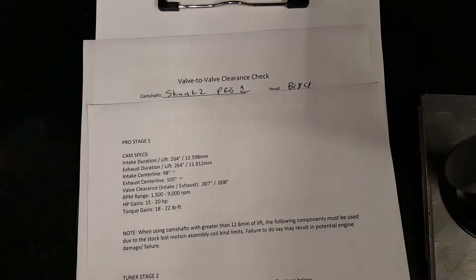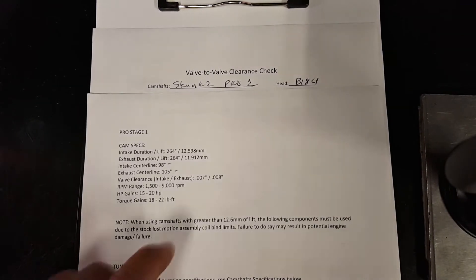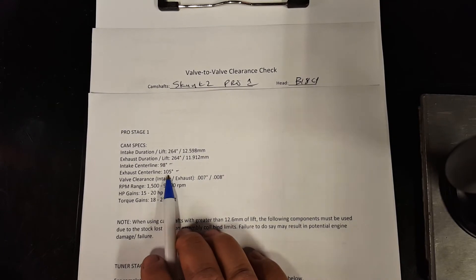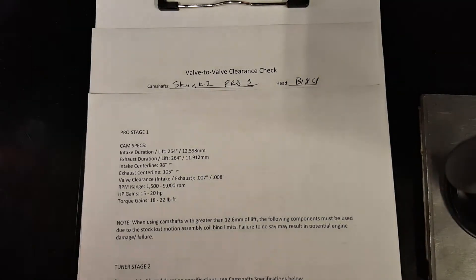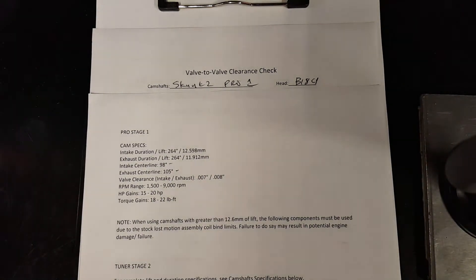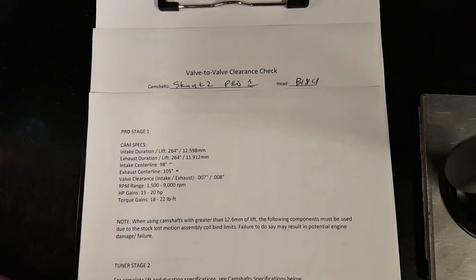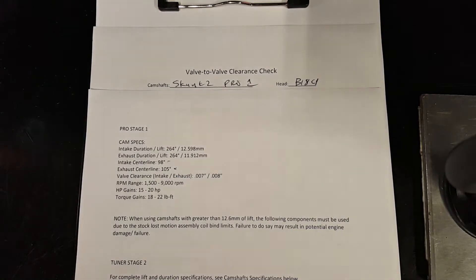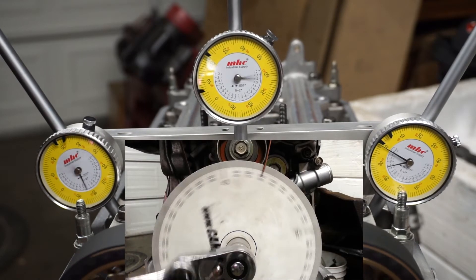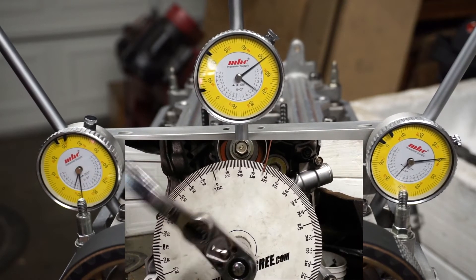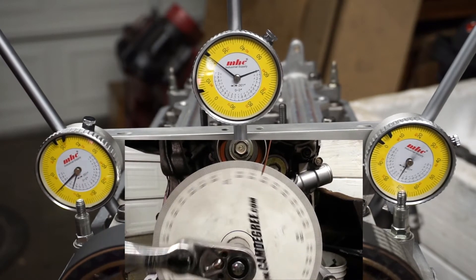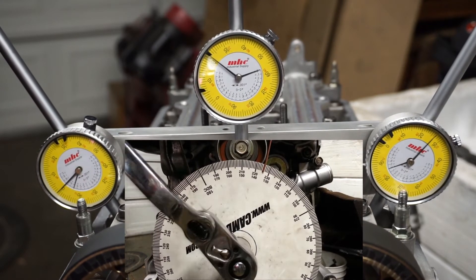The center line what we just calculated for the exhaust is at 105. So the exhaust cam gear at zero, we've already found that the exhaust side is good. Let's go back to the beginning, set everything back and we'll do the intake side now.